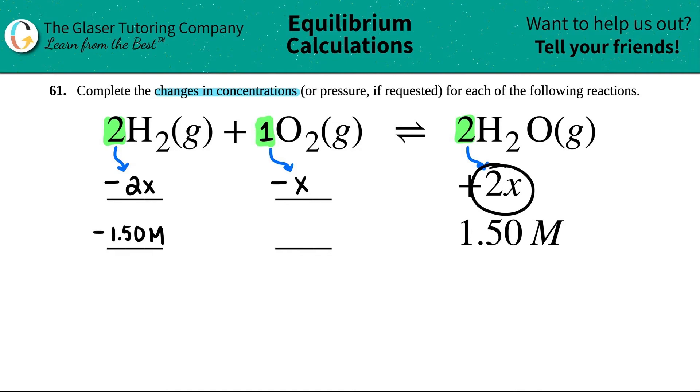So if they said that 2X collectively equals 1.50, I can solve for X by just dividing by 2. I divide by 2 on both sides and I get 0.750. And I think I just want to double check. I'm like 100%. Yeah, we're good.